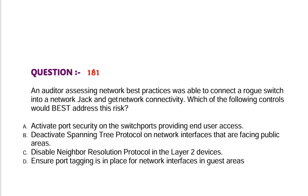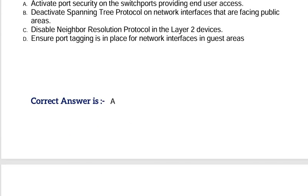Question: An auditor assessing network-based practices was able to connect a rogue switch into a network jack and get network connectivity. Which of the following controls would best address this risk? Option A, activate port security on the switch ports providing end user access. Option B, deactivate spanning tree protocol on network interfaces facing public areas. Option C, disable neighbor resolution protocol in the layer 2 devices. Option D, ensure port tagging is in place for network interfaces in guest areas. Correct answer is Option A.